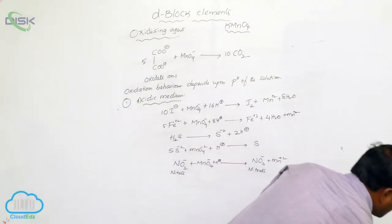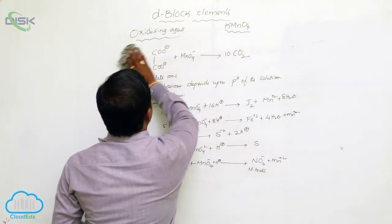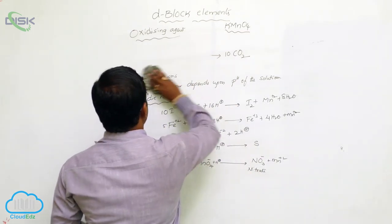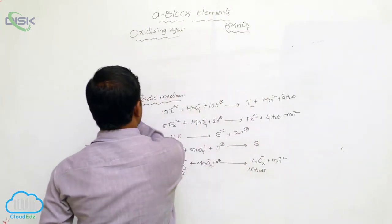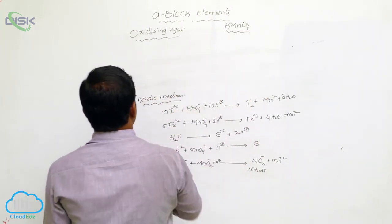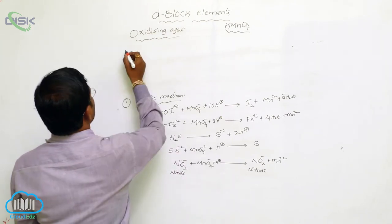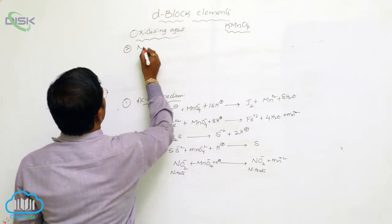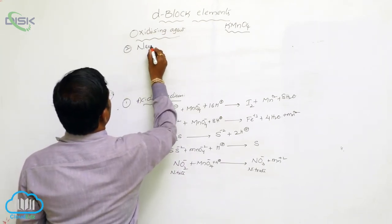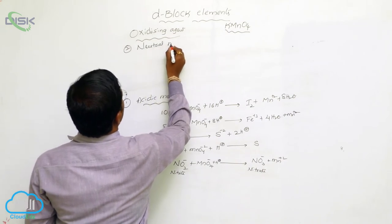Similarly, some oxidation reactions are expected to take place in neutral medium, where pH becomes 7. These are the oxidation reactions of potassium permanganate in neutral condition or neutral medium.